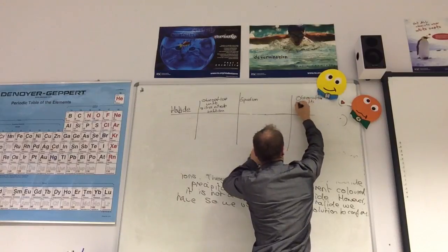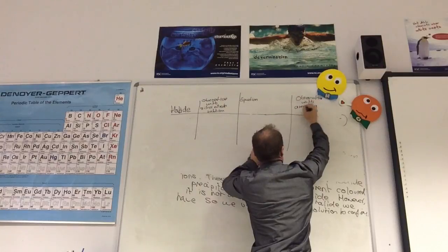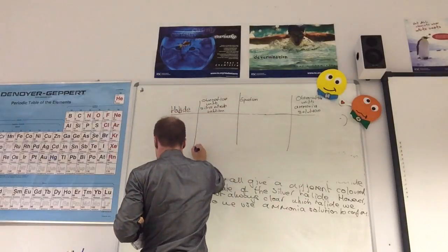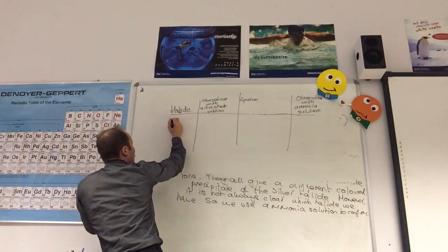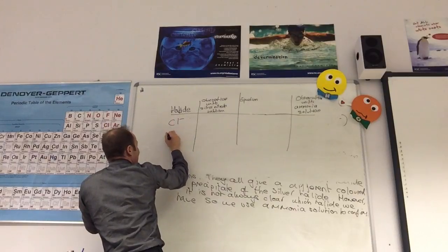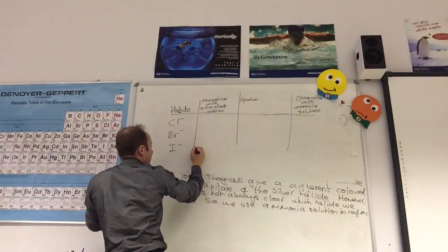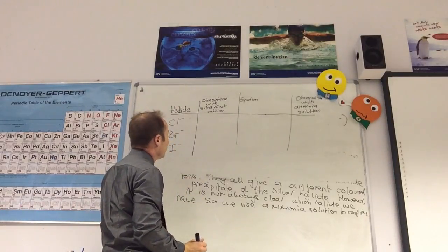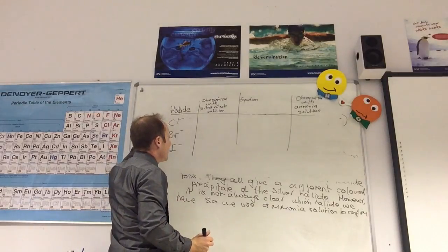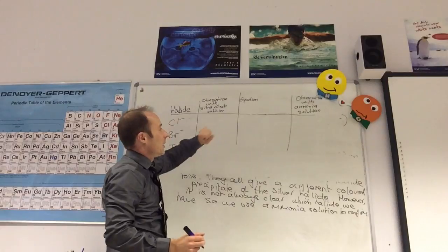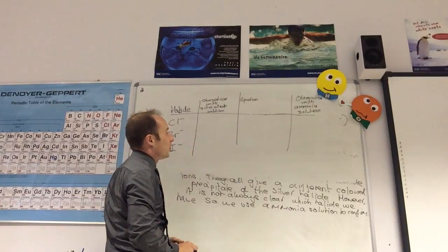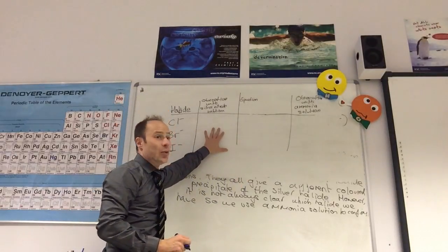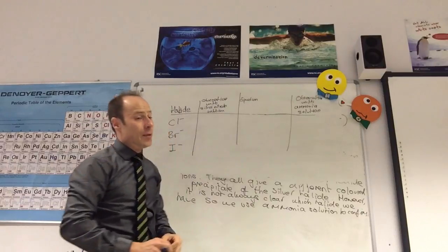With ammonia solution. We're going to test chloride (Cl⁻), bromide (Br⁻), and iodide (I⁻). Observation with silver nitrate solution, we'll then do the equation, and then the observation with ammonia solution. The aim now is for you to do the practical, and after the practical we'll come back and fill out this table, because you'll be able to tell me what the colours are.